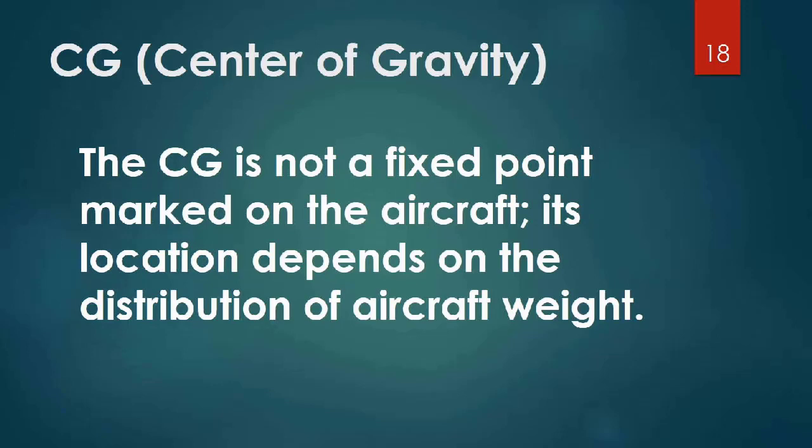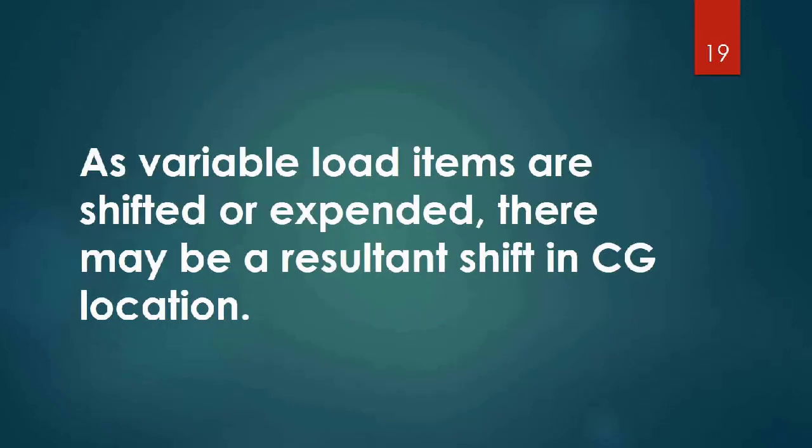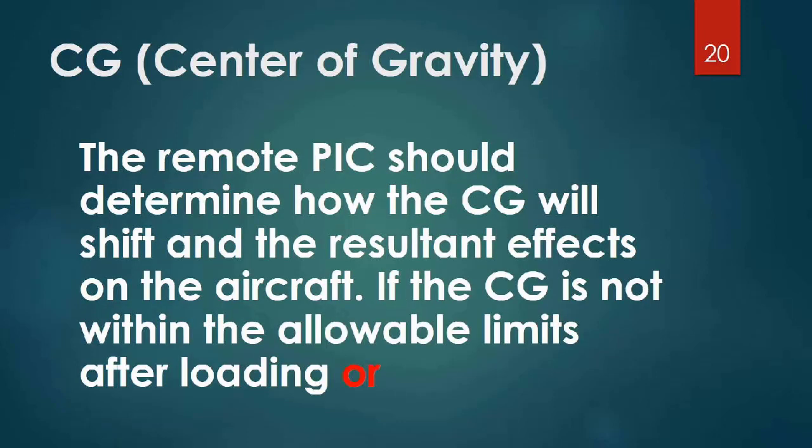The CG is not a fixed point marked on the aircraft. Its location depends on the distribution of aircraft weight. As variable load items are shifted or expended, there may be a resultant shift in CG location.